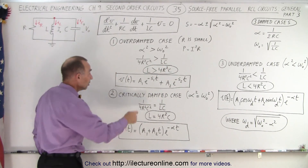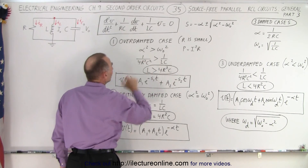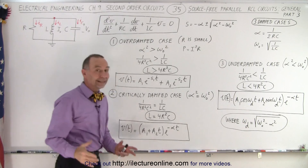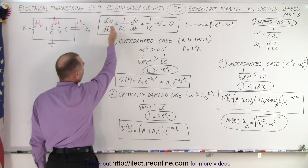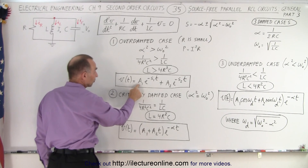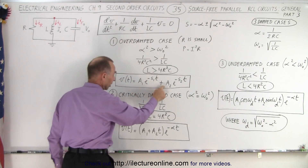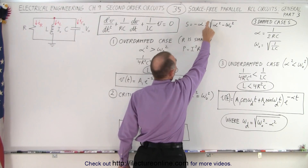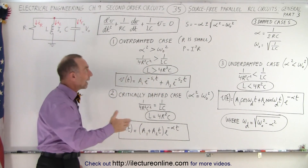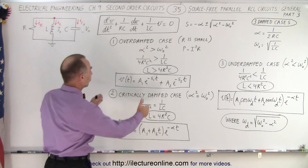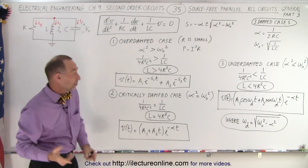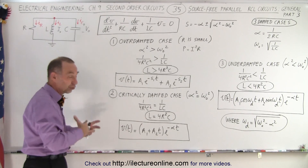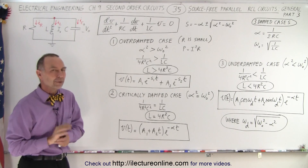There are two ways to calculate it: you can use this equation, or you can simply compare alpha and omega sub-naught. If we have a positive number underneath the radical, then the general solution is that the voltage as a function of time is A1 times e to the minus S1t plus A2 times e to the minus S2t. S1 and S2 are the two values that come out of the characteristic equation, where in one case we have a positive and in another case a negative radical of alpha squared minus omega sub-naught squared. To find the constants A1 and A2, we'll need the initial conditions of the current and the voltage.